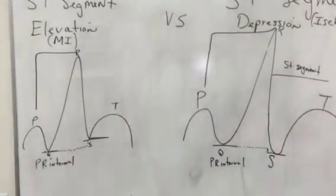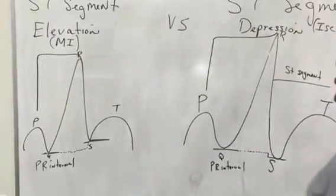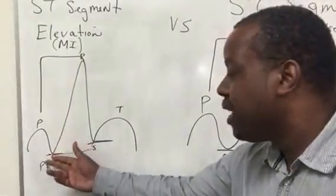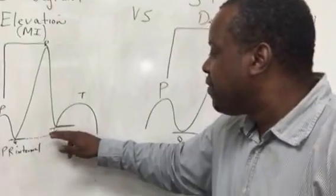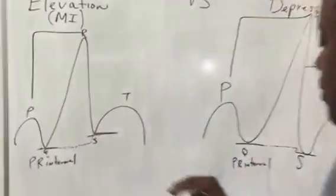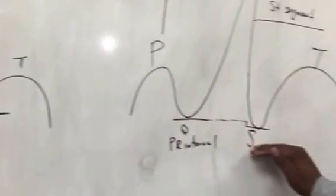Alright, so basically that's the gist of it. Use your PR interval as your baseline to establish if the ST segment is higher or if it's lower.